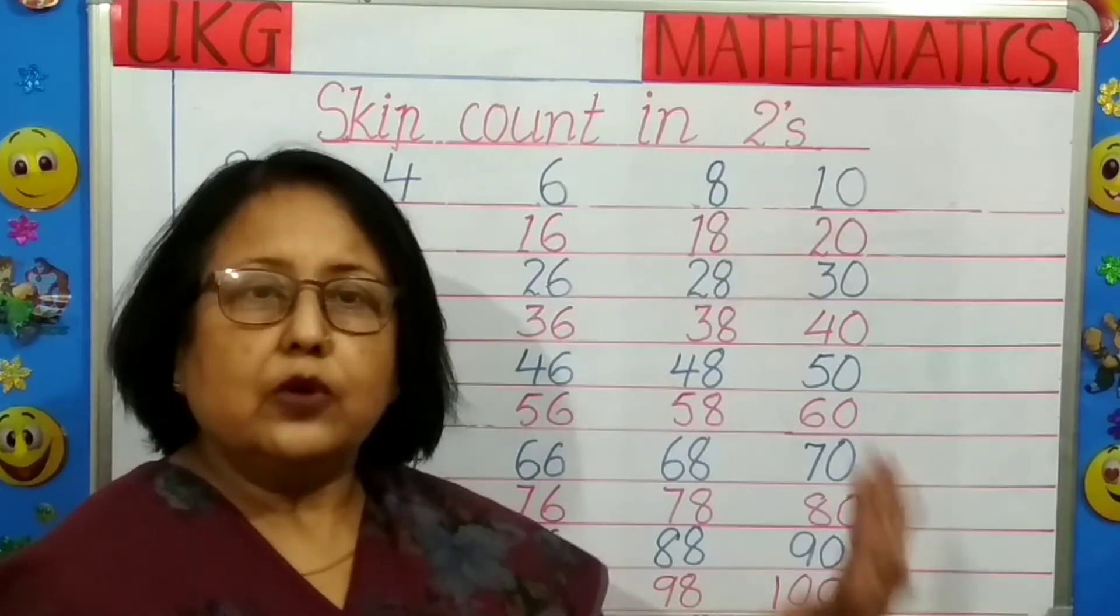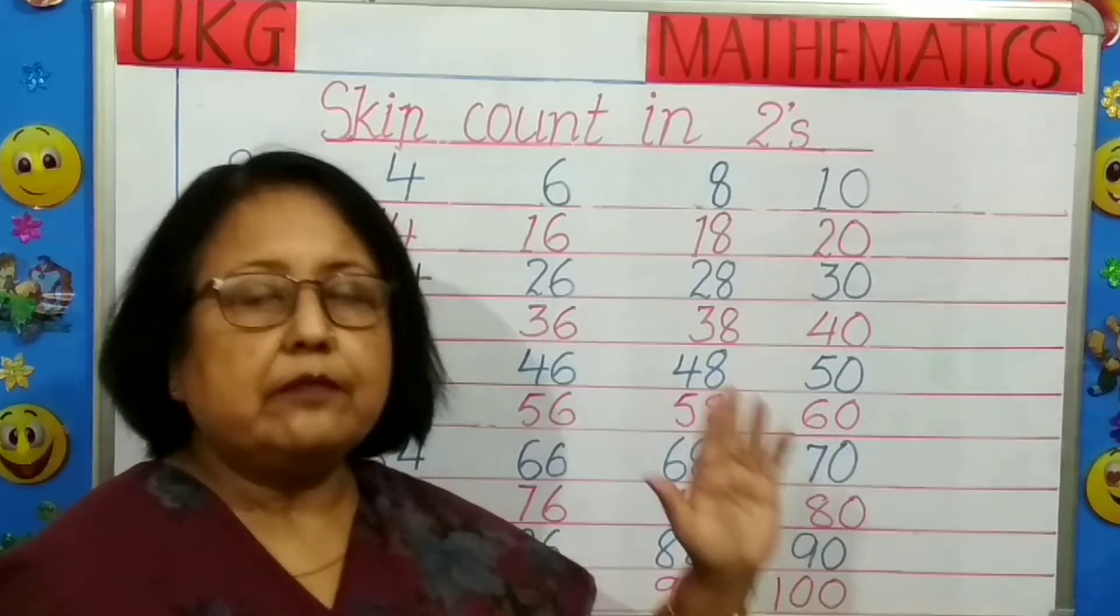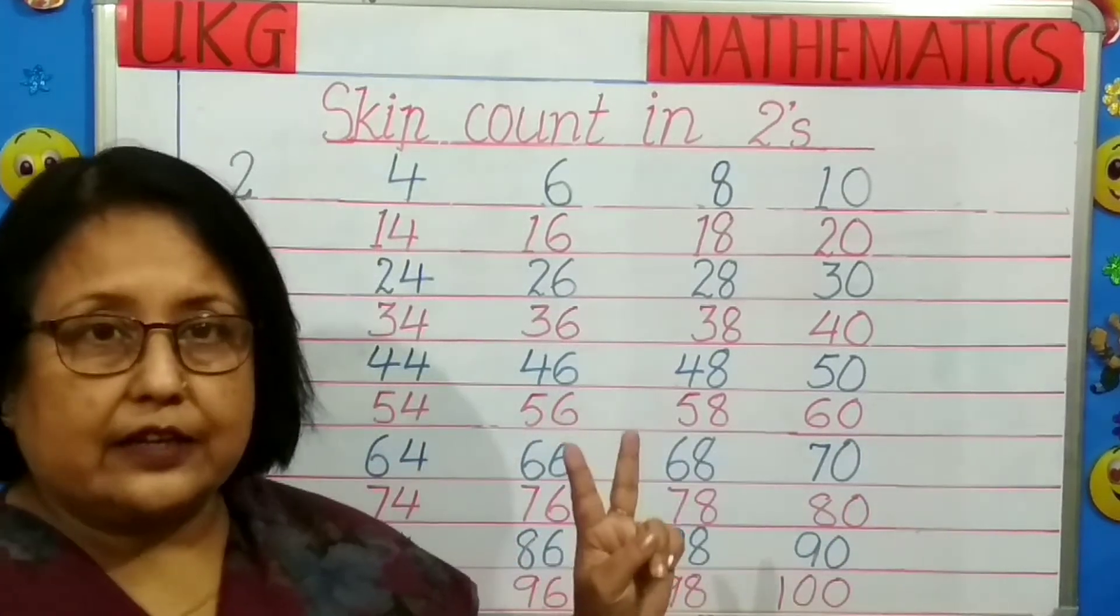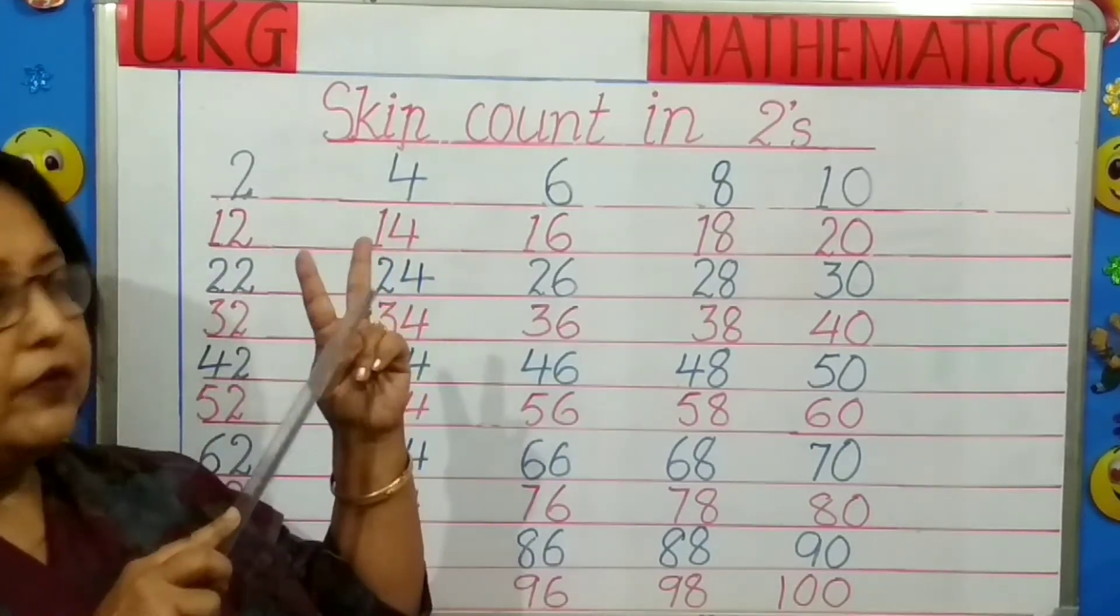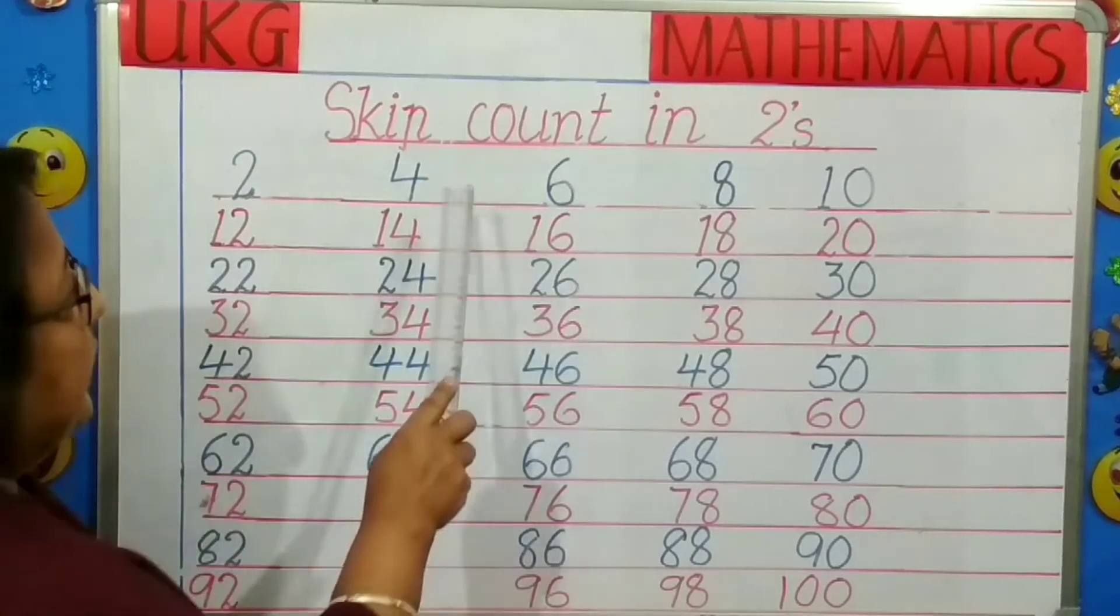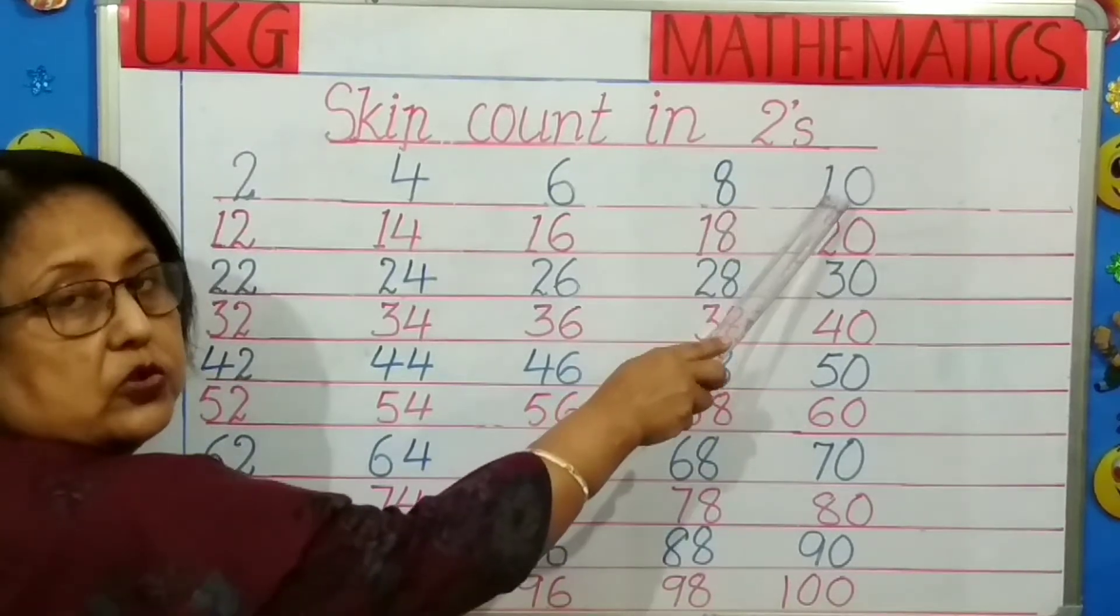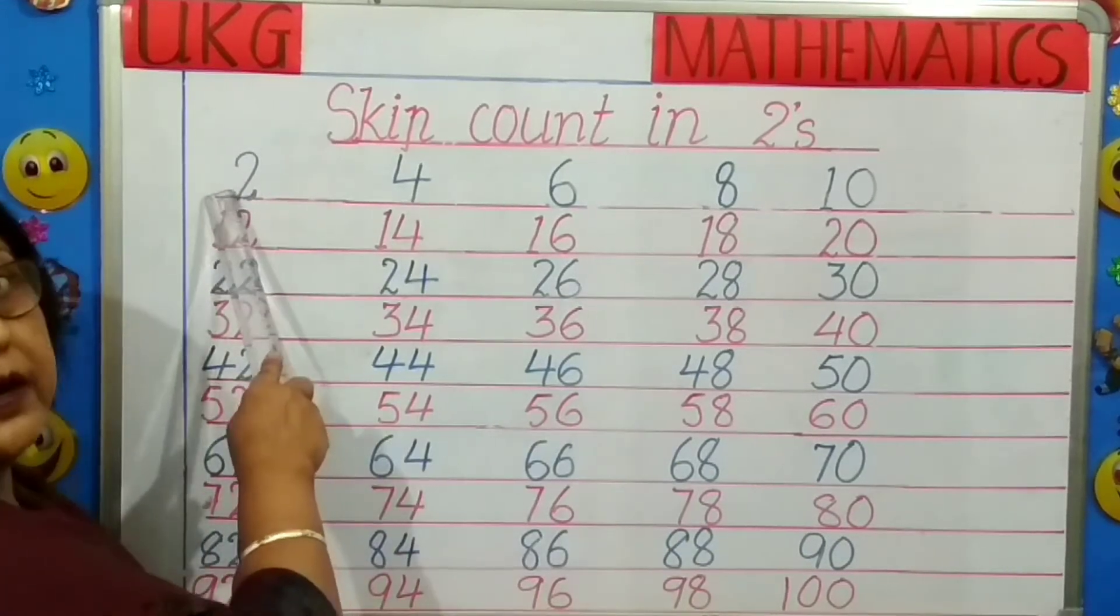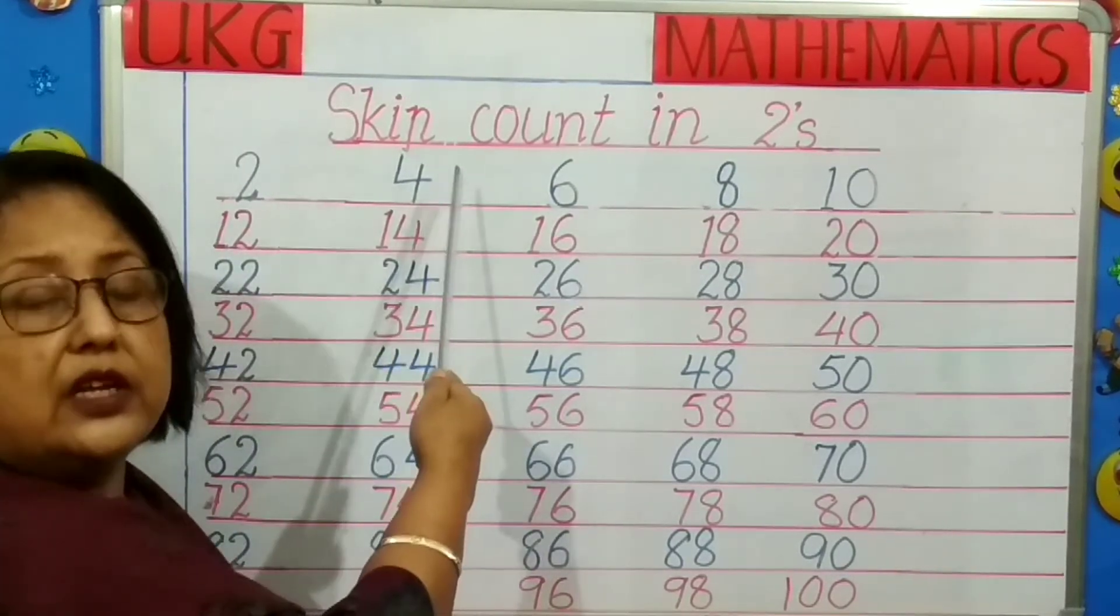So children you have already done this in LKG and we are repeating the same thing in UKG just that we are going a little ahead with numbers. What have you done? You have skipped the numbers like 2, we have skipped 3 and we have gone to 4. So 5 you skip, you go to 6, 7 you skip, you go to 8, skip 9 and you go to 10. In a similar way you have to do the same thing. Always look at the first number. When you look at the first number, you remember the next number you skip and then go on to the next number.